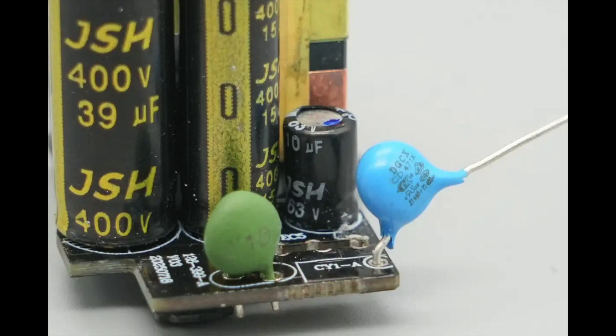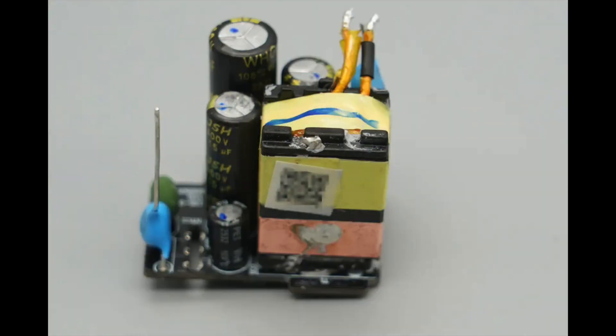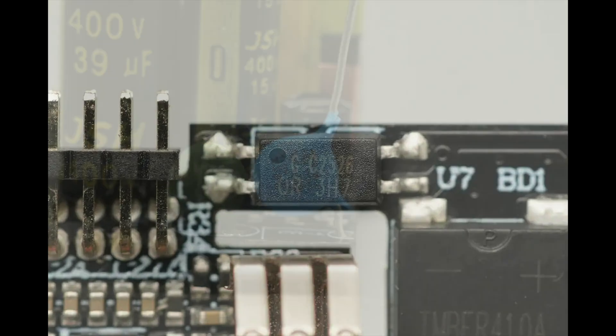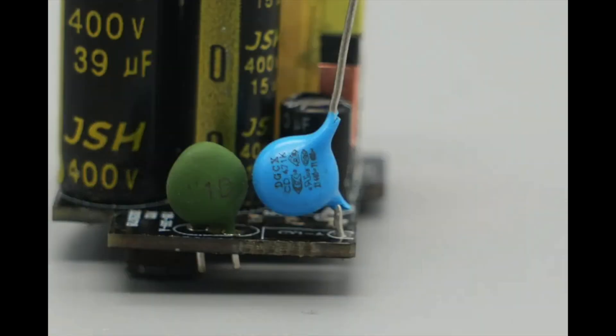The capacitor supplying power to the master control chip is also from JSH, rated at 63 volts 10 microfarads. Close-up of the transformer. The OR3H7 optocoupler is used for output voltage feedback. The blue Y capacitor is from DGCX.